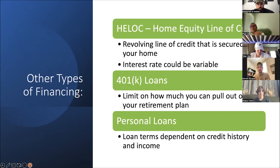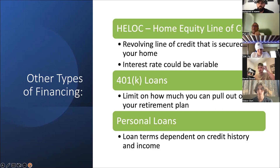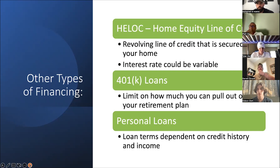Julian clarifies on the HELOC: it's variable from the standpoint that it's a line of credit you can draw on at different times. If you draw $20,000 today, it's at today's specific interest rate. If you draw six months or a year from now, it'll be at a different rate based on what rates are at that given time. So it is variable in that respect.